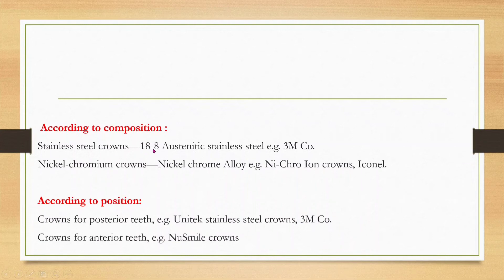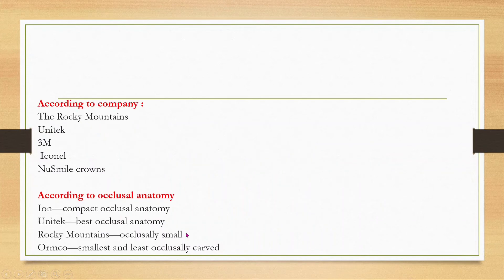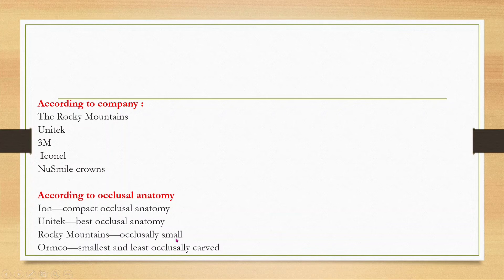Classification regarding composition: stainless steel 18-8 austenitic, nickel-chromium. By position: crowns for posterior and crowns for anterior. By company: Rocky Mountain, Unitek, 3M, NuSmile, and Econel. By occlusal anatomy: Unitek has compact occlusal anatomy; Unitek West and Rocky Mountain OMCO have different occlusal anatomies.